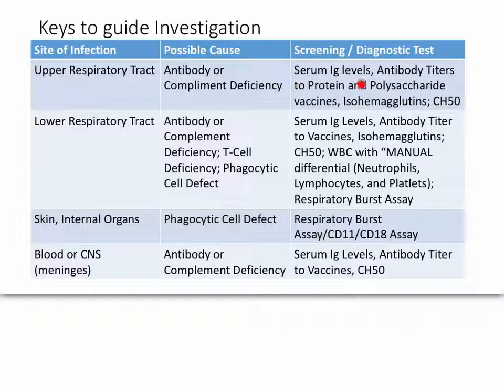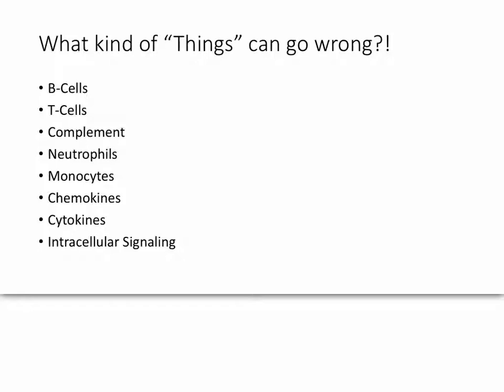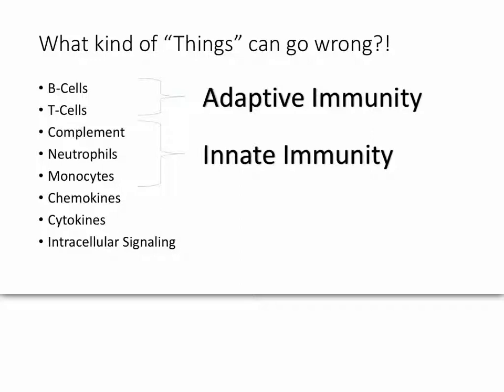So what should we do? We could check the Ig levels in the serum, do antibody titers to the vaccines she's been vaccinated against, and do the CH50, which looks at complement. As an interlude — what kinds of things can go wrong with the immune system? You've got B cells, T cells, complement, and phagocytes. You can group these as adaptive immunity, innate immunity, or combined components of both.